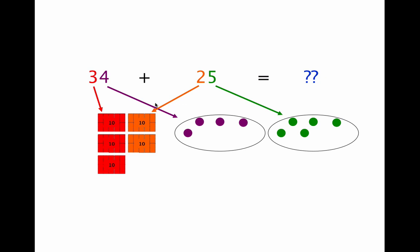When we add 2 digit numbers, we always add our ones first. So let's count up the total number of dots. 1, 2, 3, 4, 5, 6, 7, 8, 9. We have 9 dots, so we write a 9.